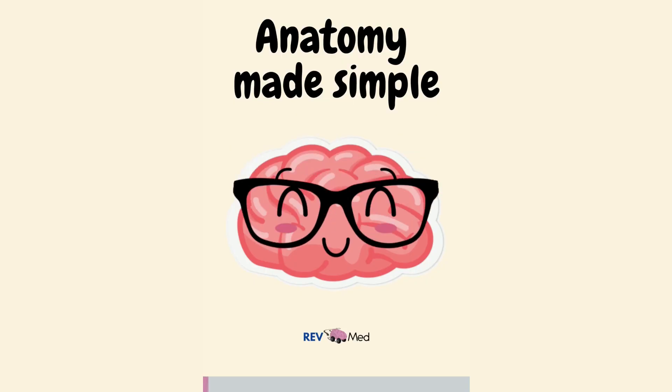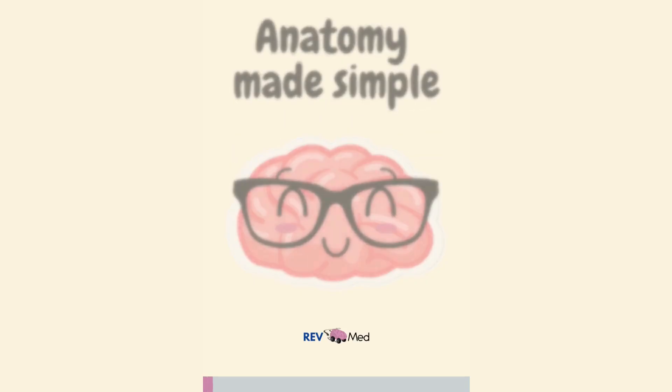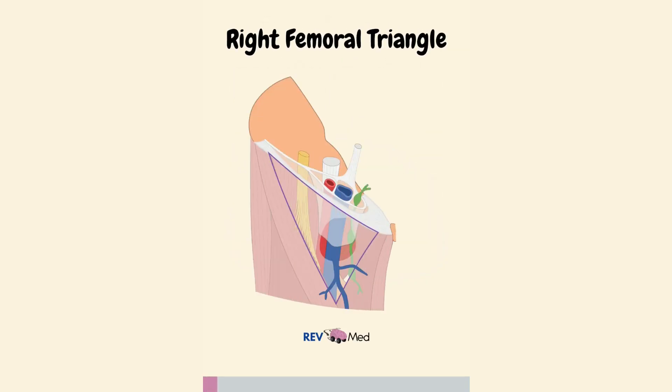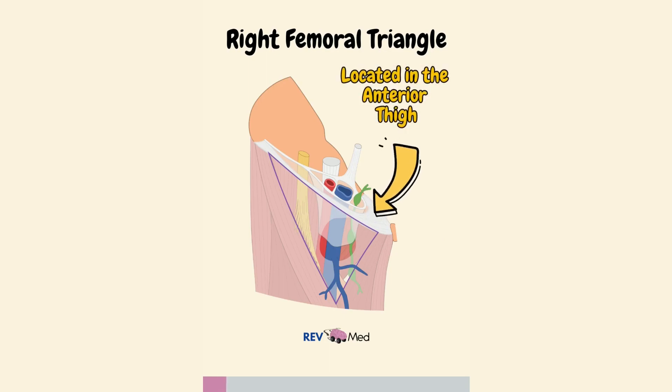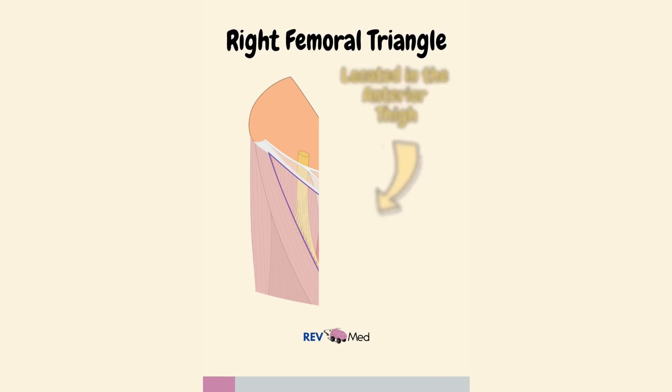Here's the most simple explanation you'll hear today. Let's draw out the right femoral triangle, located and seen from the anterior thigh.